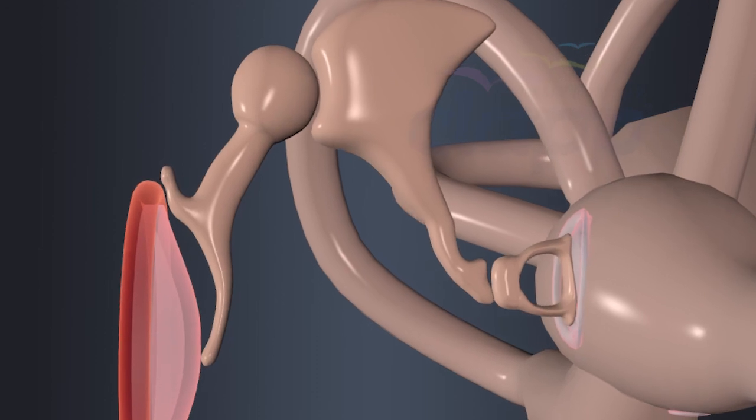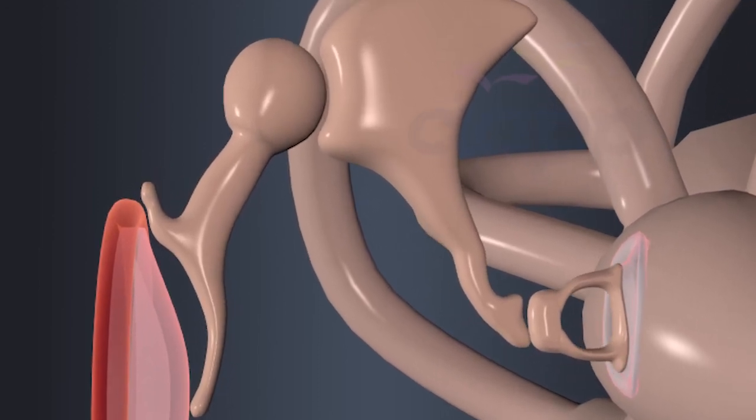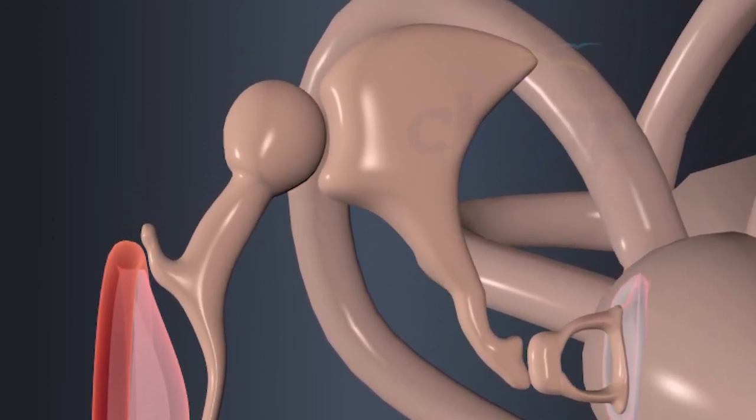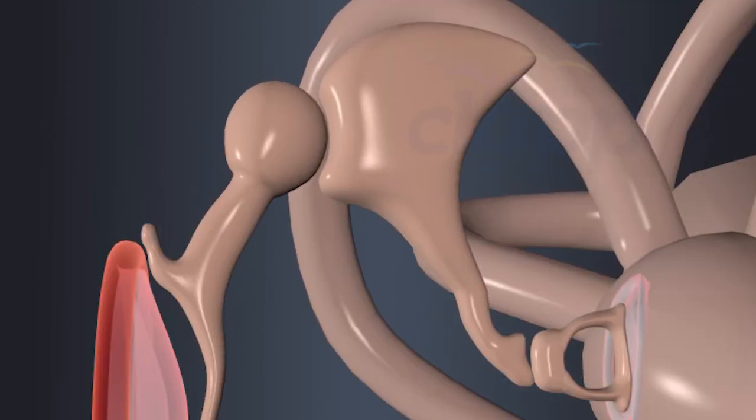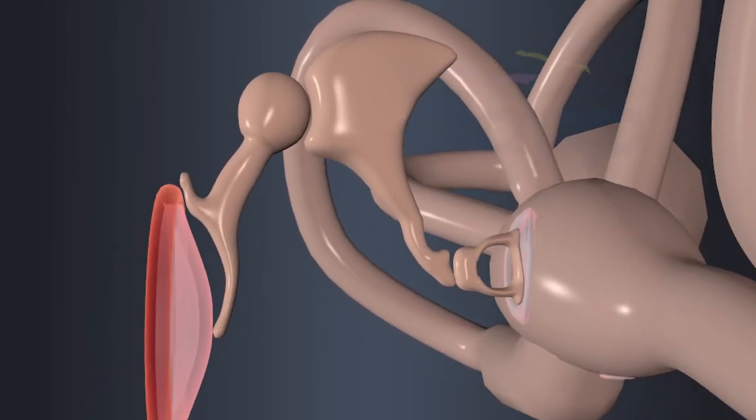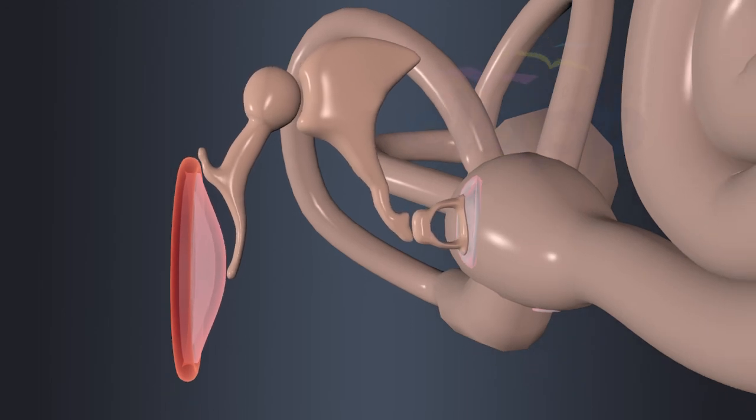The chain of ossicles—malleus, incus, and stapes—acts like a lever system, which allows for efficient transmission of sound energy from the relatively large tympanum to the smaller oval window. This amplification is necessary because the inner ear requires a higher intensity of sound to function properly.